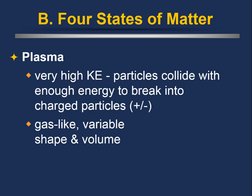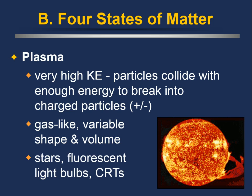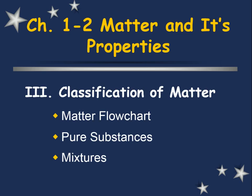Plasma is gas-like because it has a variable shape and variable volume, but it's at a whole other level of kinetic energy compared to gas. Stars are made of plasma — our solar system is about 98% our star by mass, so plasma is actually much more common in the universe than solid, liquid, or gas. We also see plasma in fluorescent light bulbs and cathode ray tubes (CRTs) — old-time TVs or monitors.